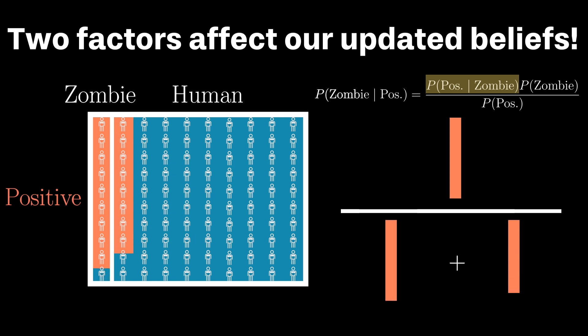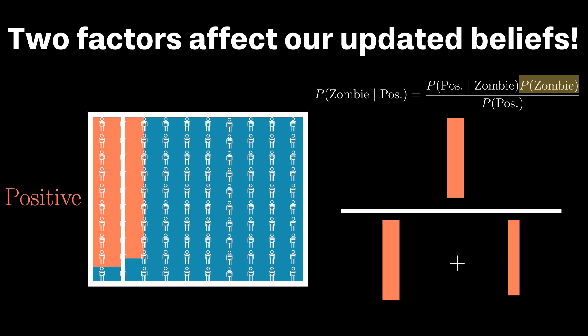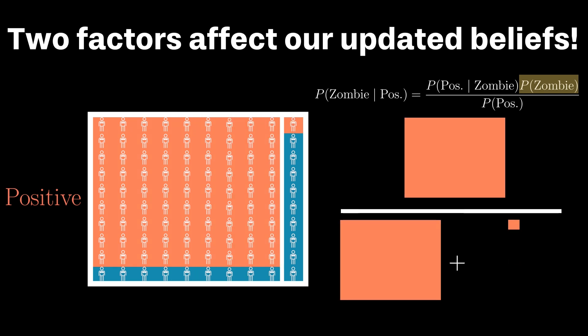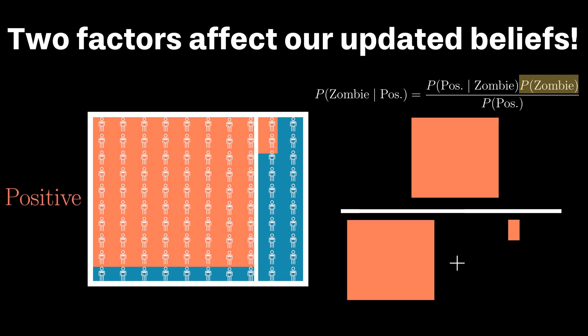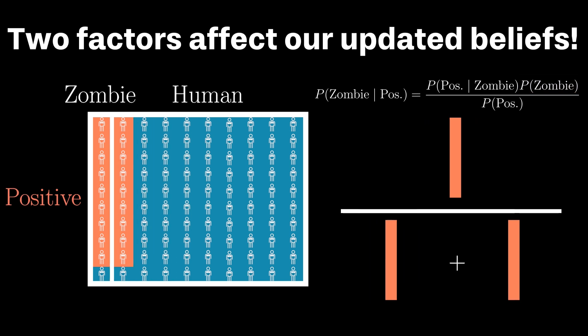The second factor, which tends to be a bit less intuitive, is our prior estimates of the population. Let's keep the accuracy of the test constant, but now increase the relative proportion of the population that is a zombie. As we can see, if we increase our prior estimate of the chance someone is a zombie, the higher the chance someone actually is a zombie given a positive test result — here, we are around 99% certain. So, the sensitivity of our test, as well as our prior estimates of the population, are the key factors that affect our new probabilities with additional information.